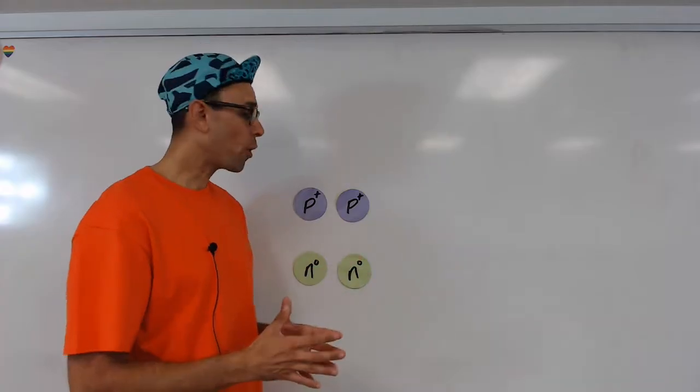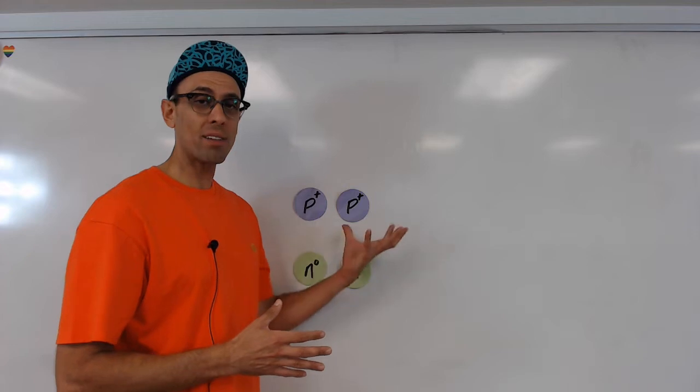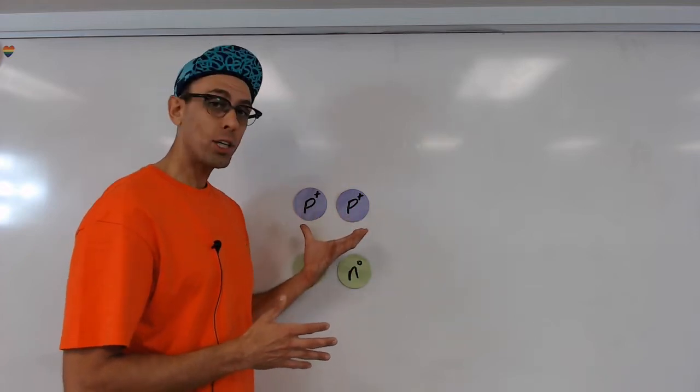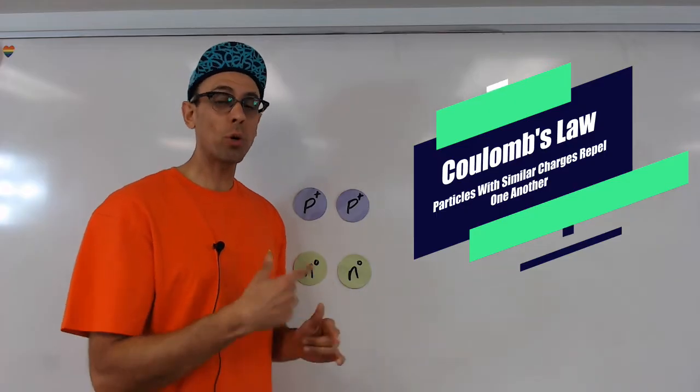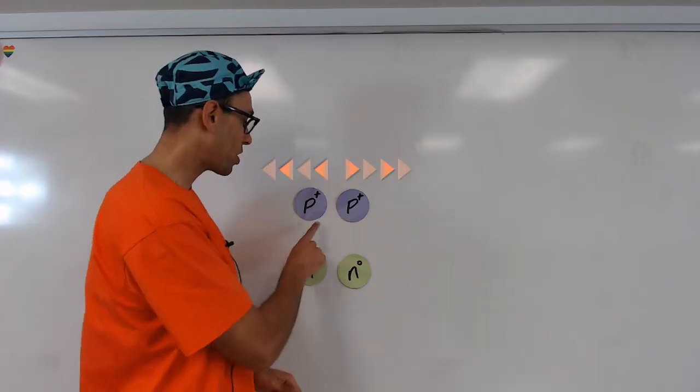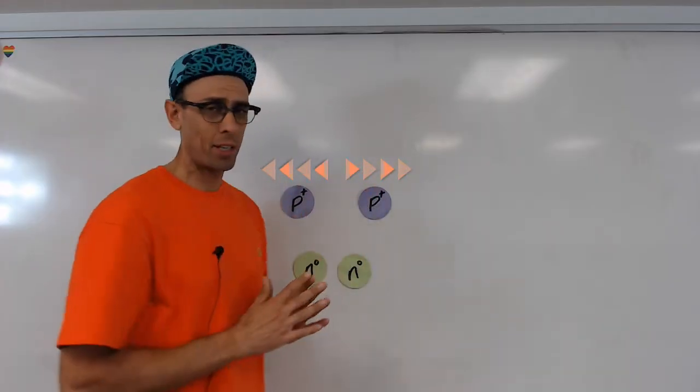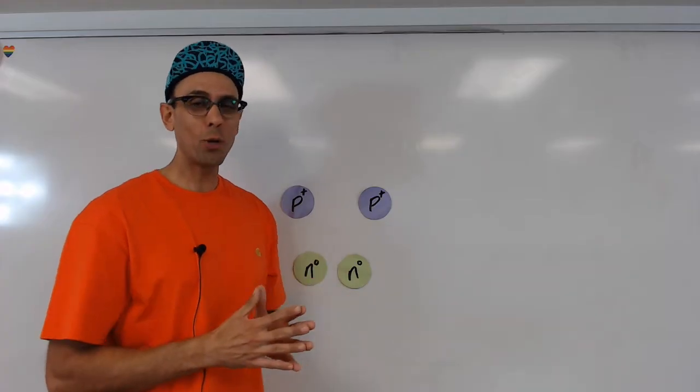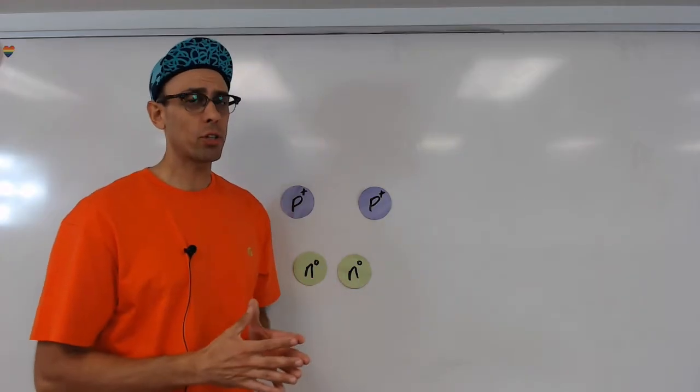You see, if we focus our attention on the protons first, we would all agree that they all have a positive charge. And Coulomb's law explains that particles with like or similar electrical charges repel one another. So in other words, this proton and this proton, they're pushing away from each other. They don't want to be close neighbors. Now when it comes to the neutrons, they don't have any electrical charge at all.